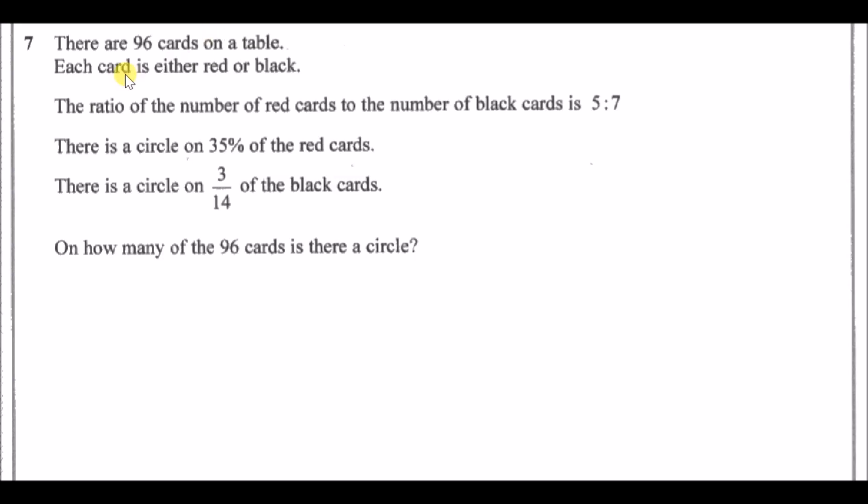Number seven: There are 96 cards on a table, each card is either red or black. The ratio of red cards to black cards is 5 to 7. If you add these parts up we have a total of 12 parts, meaning 5 out of 12 cards are red whereas 7 out of 12 cards are black. In your calculator, write 5 over 12 times 96 to get the number of red cards, which gives you 40 cards. If you do 7 out of 12 times 96, you get 56. Double checking, 40 + 56 gives us 96.